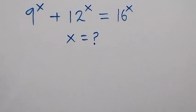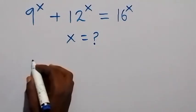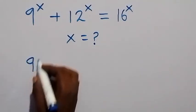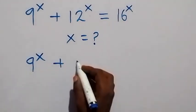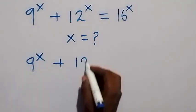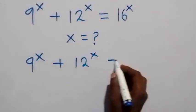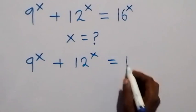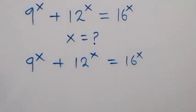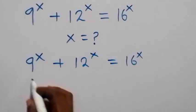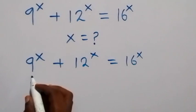Hello, you are welcome. Today we solve this exponent problem: 9 raised to power x plus 12 raised to power x equals 16 raised to power x. Let's divide through by 9 raised to power x.